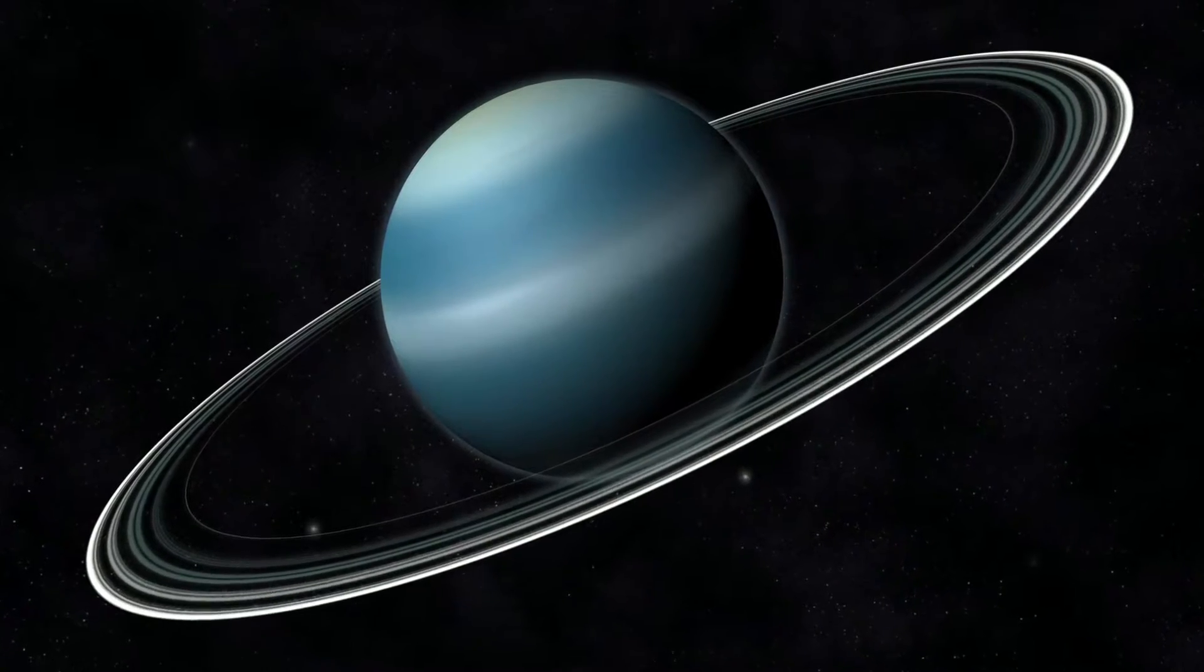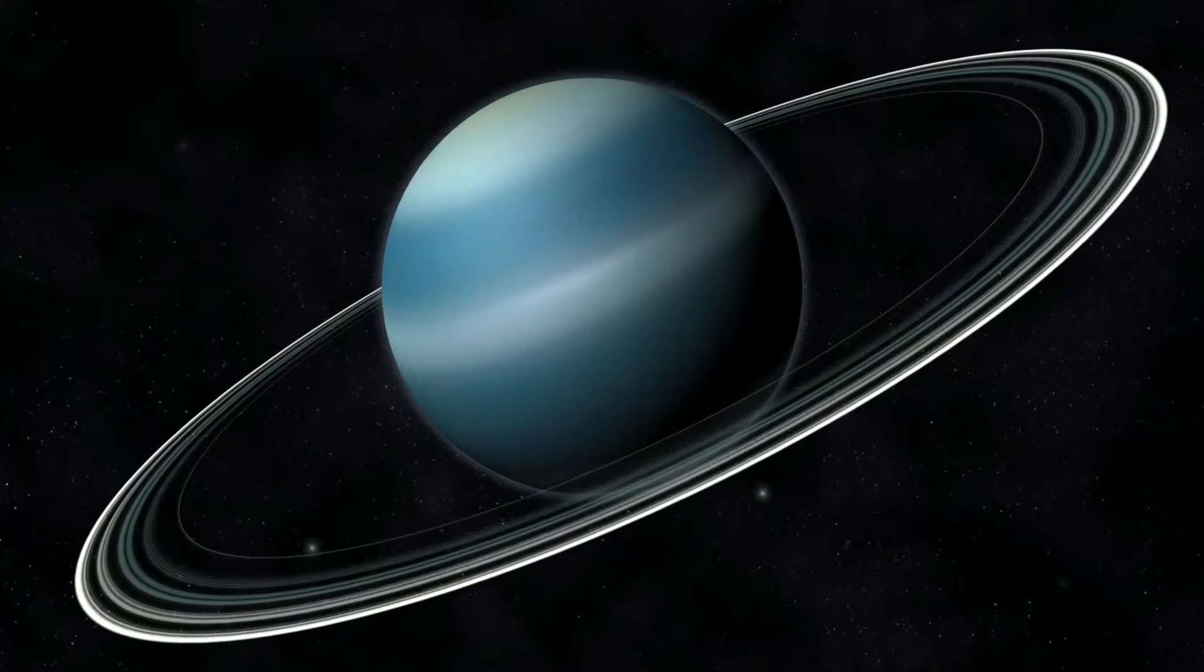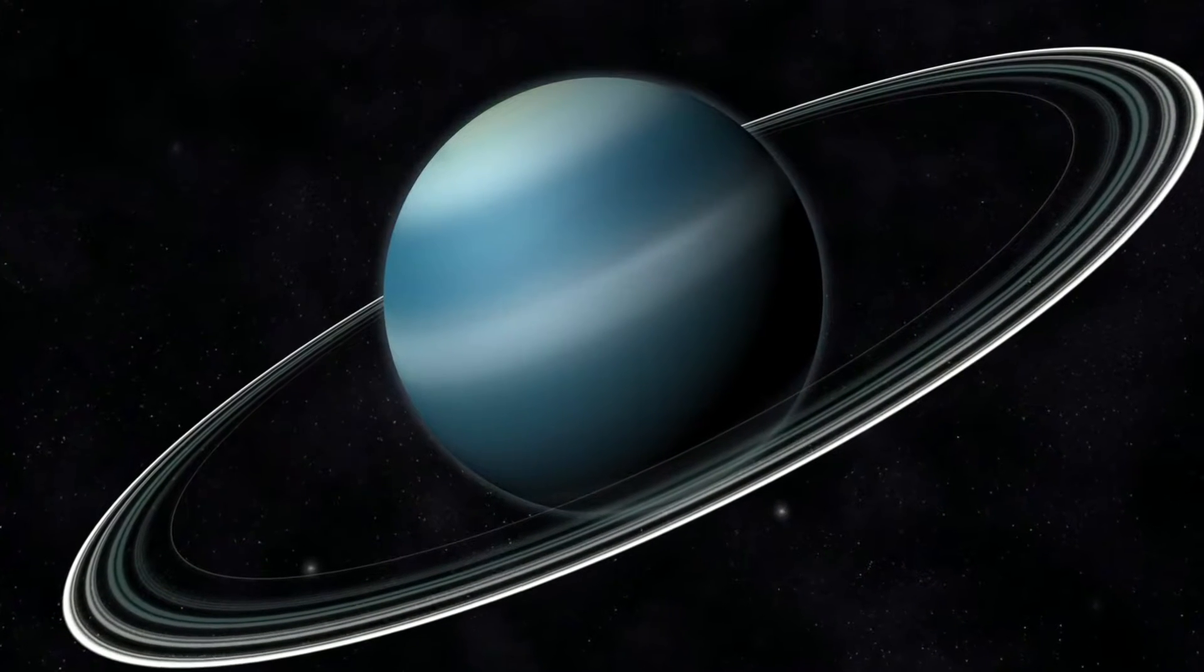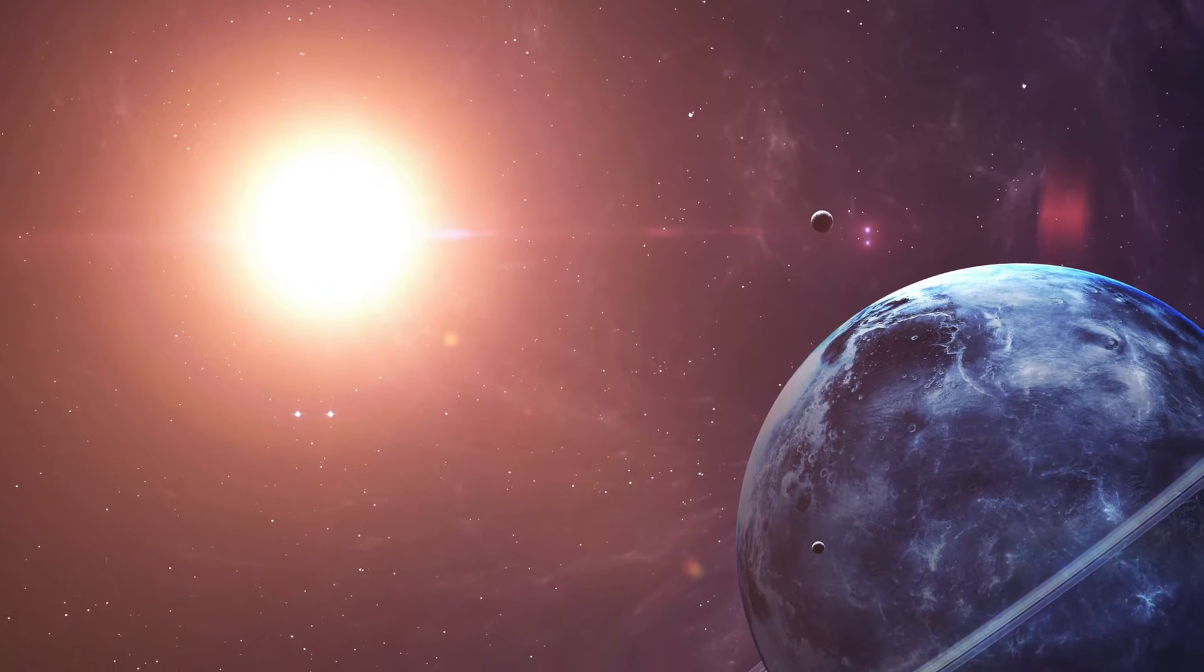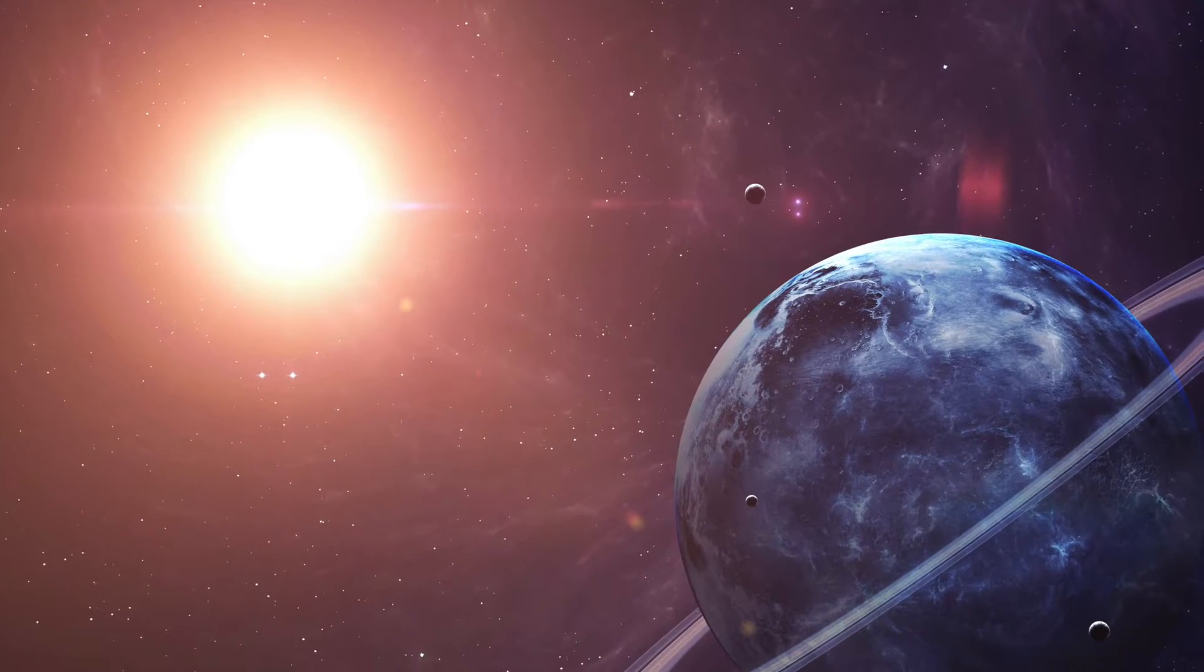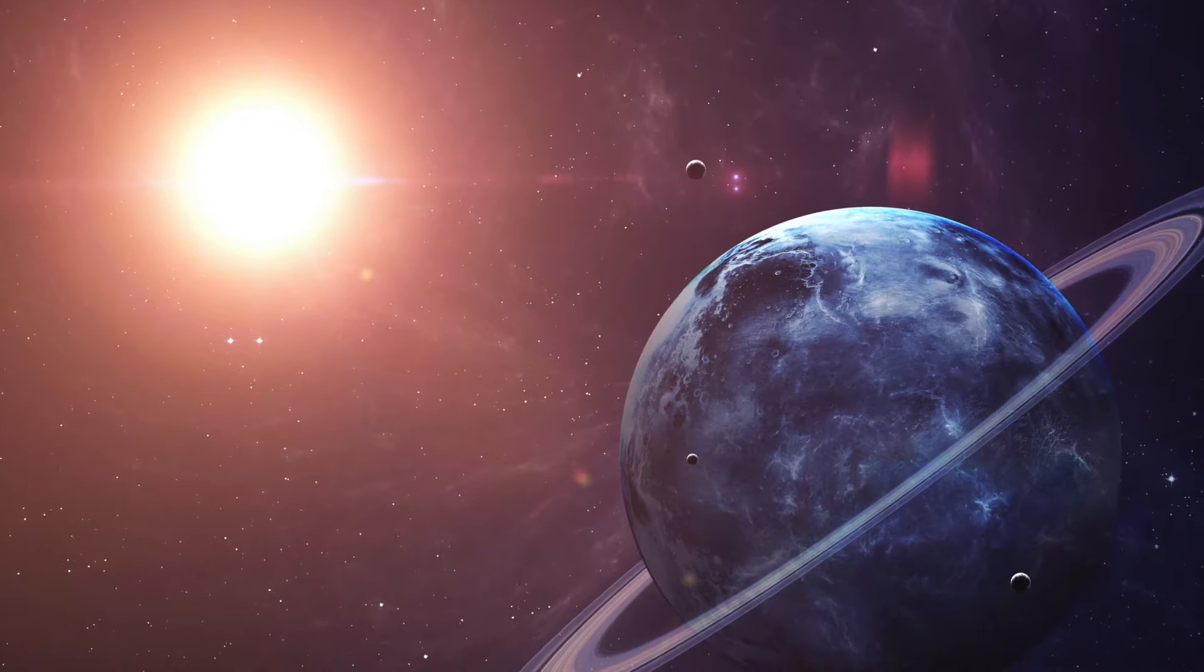Because Uranus has an unorthodox rotation, the seasons on the seventh planet from the Sun last 21 Earth years. The variations in the amount of sunlight in the different seasons and regions during the Uranian year are enormous.